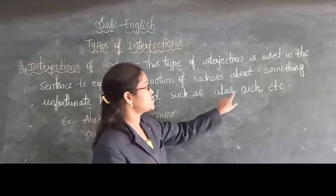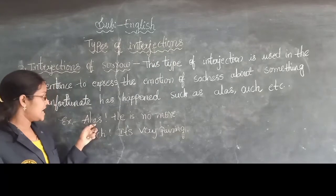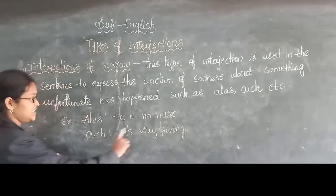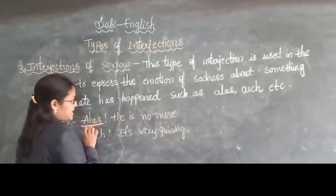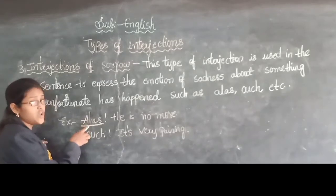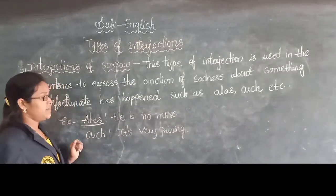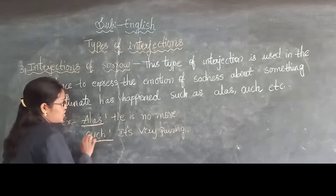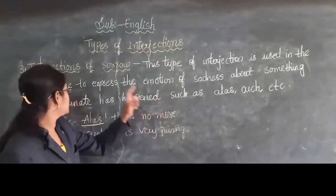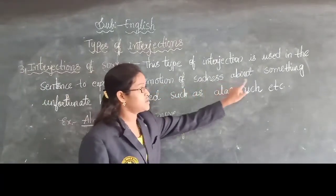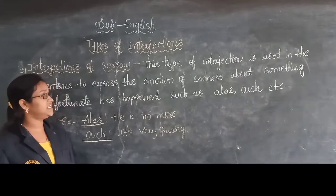Examples of interjections of sorrow are alas and ouch. See the sentence: Alas, he is no more. In this sentence, alas is indicating the sadness, so it is the interjection of sorrow. Next sentence: Ouch, it's very paining. In this sentence, ouch is the interjection of sorrow. Interjections of sorrow is used to express the emotion of sadness about something unfortunate that has happened.